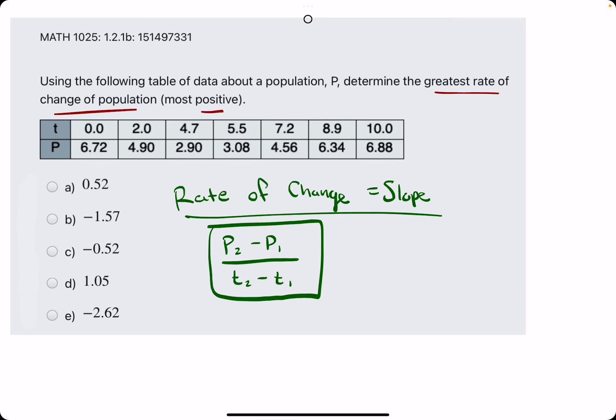In other words, from here to here there's a decrease in the P value, so we're not going to find the slope between those two points. So in other words, from here to here there's a decrease in the P value, so we do not need to find the slope between these two points.